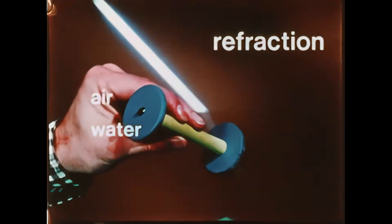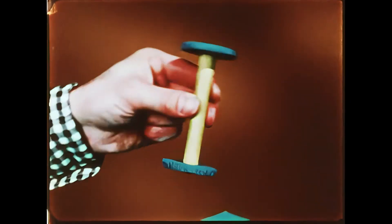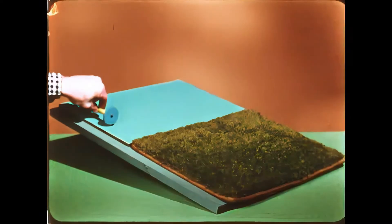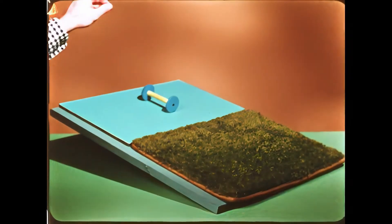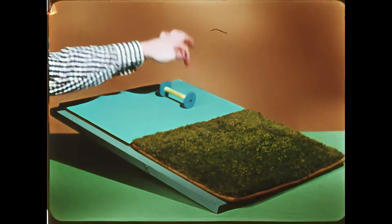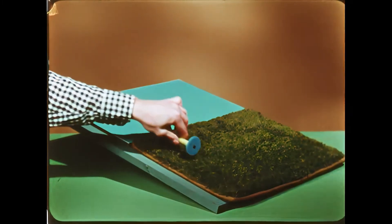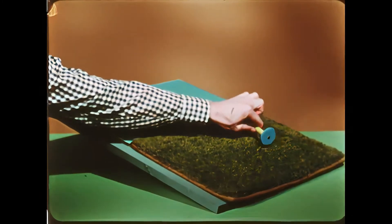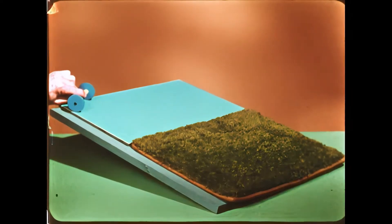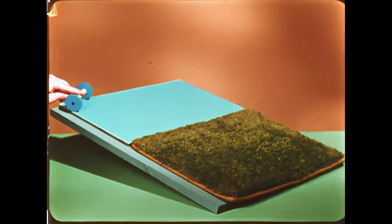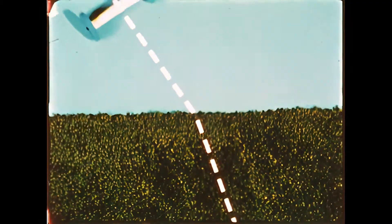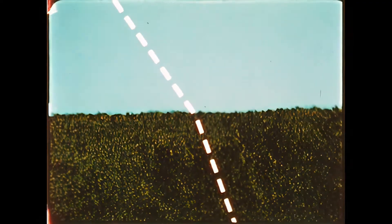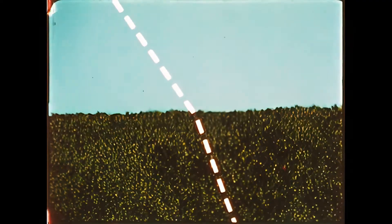The light behaves like a set of wheels. On a smooth surface, the wheels move quickly. On a rough surface, they move slowly. When the wheels roll into the rough surface at an angle, they slow down and turn slightly. What results is a change in direction — a refraction.